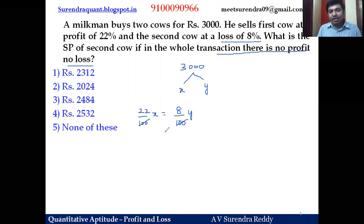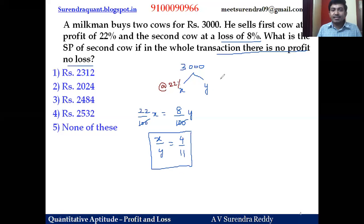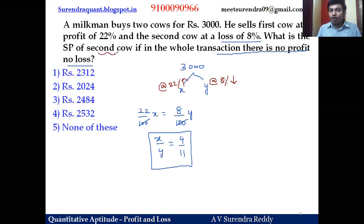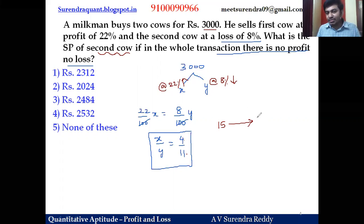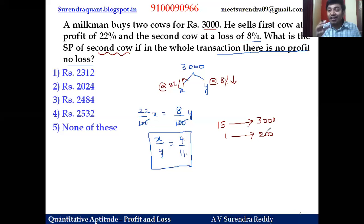Cancel the zeros: x to y ratio is 8 to 22, which is 4 to 11. The first cow at gain is x with 4 parts; the second cow at loss is y with 11 parts. Total parts: 4 plus 11 equals 15 parts. Fifteen parts equals 3000 rupees, so one part is 200 rupees. The second cow is 11 parts, so its CP is 11 times 200 equals 2200 rupees.